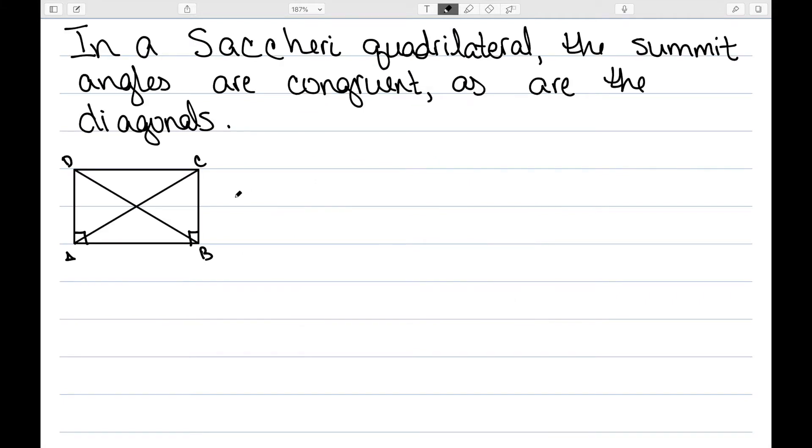In a Saccheri quadrilateral, the summit angles, this angle at C and at D, are congruent, as are the diagonals. So this is the first thing I want to show. We know that segments AD and BC are congruent by the way this is constructed. We pick these points so that these segments are congruent. We also know that the angle at A and the angle at B are congruent since they're both 90 degrees.